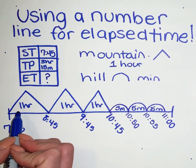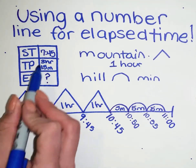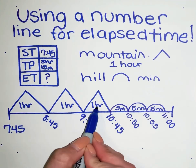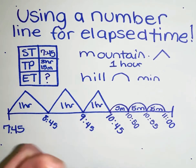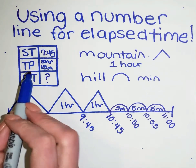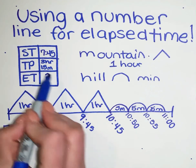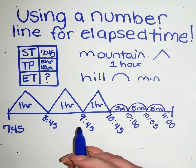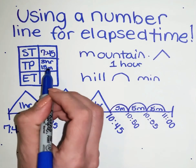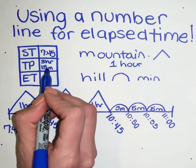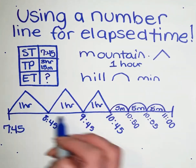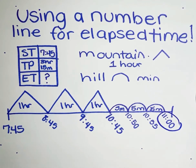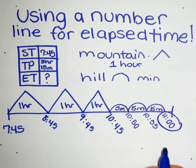I always make sure I counted correctly — we needed three hours and 15 minutes. Now that I know I've used all of the time that has passed, I know that my end time is 11 o'clock.